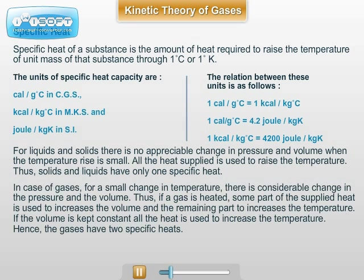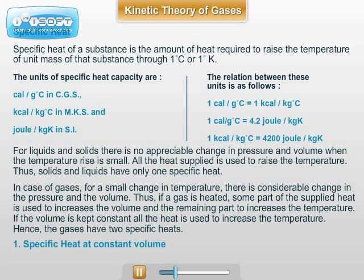But in case of gases, even though the temperature change is small, there is considerable change in the pressure and volume of the gas. This means when a gas is heated, some part of the supplied heat is used to increase the volume of the gas or to do external work, and the remaining part is used to increase the temperature. Hence, gases have two specific heats: specific heat at constant volume and specific heat at constant pressure.